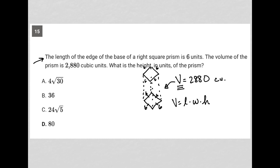By that I mean the base is a quadrilateral and then it's three-dimensional in that it has walls. So our length here is six, our width is also six, but our height — which I'll label in red here — is what we don't know. So I have six times six, which is 36. I bring the h down, giving me 36 times h, which the question tells us is equal to 2,880.